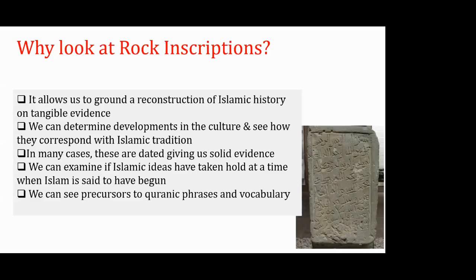I like the idea of rock inscriptions because it goes well with the numismatic evidence — we can see how they parallel each other. One argument potentially used against this evidence is that absence of evidence isn't evidence for absence. But when we're looking at a summary of about 100,000 inscriptions across a large geography, it's hard to make a case that not seeing certain types of evidence is just by accident.